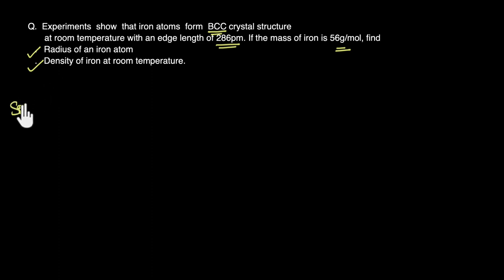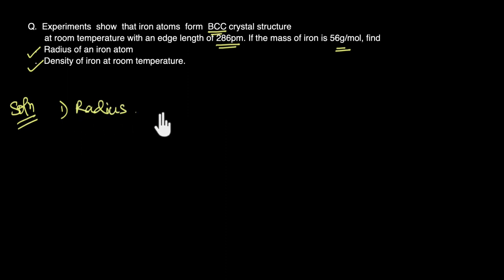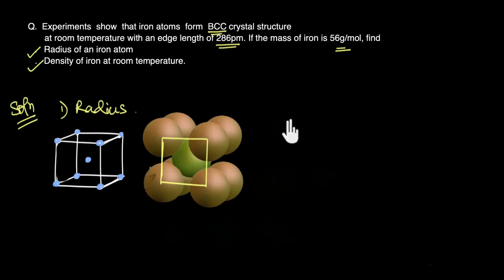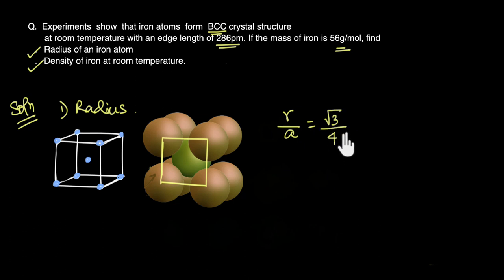Let us first think about how we can calculate the radius. In unit cells, the radius is very closely related to the edge length. In BCC, the ratio of the radius to the edge length is always equal to √3 by 4. This can be derived using the fact that in BCC, atoms across the body diagonal touch each other.